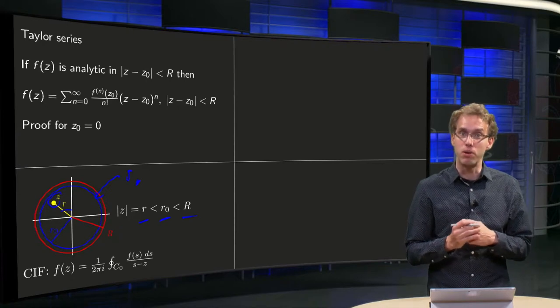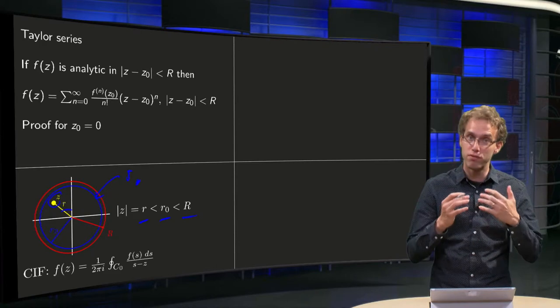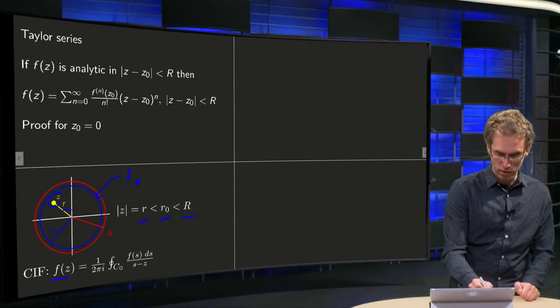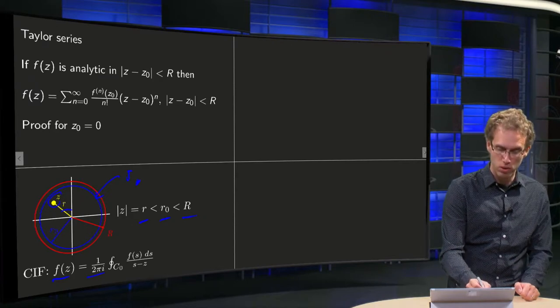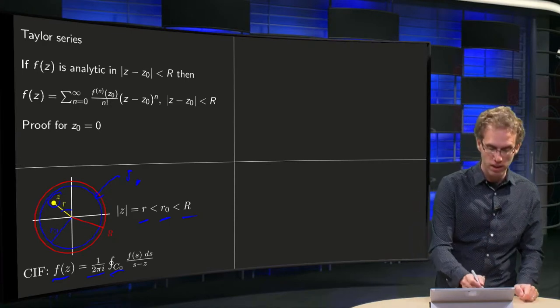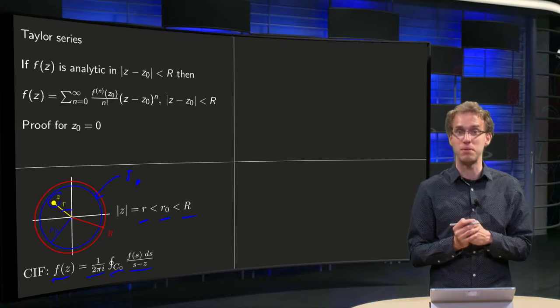And now we are going to use Cauchy's integral formula, which tells us that f of z equals 1 over 2πi times a contour integral along c₀, where c₀ is the circle with radius r₀, f of s times 1 over s minus z.